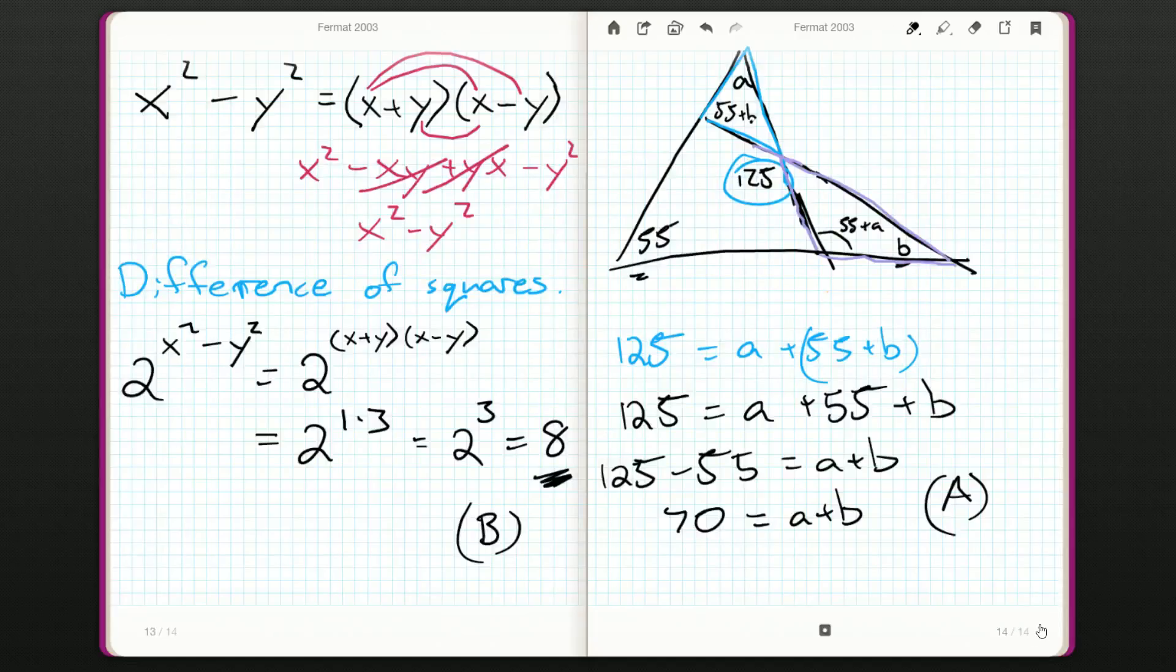Grab ourselves another scrap piece of paper and we've got, let's say, an equilateral triangle. This isn't a bad one. And we've got a square.